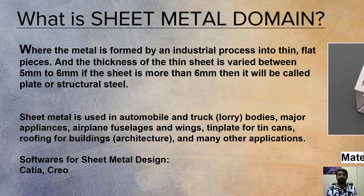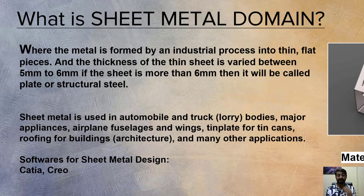The next domain is sheet metal. Sheet metal is formed by an industrial process into thin, flat pieces. The thickness varies between 0.5 mm to 6 mm; if the sheet is more than 6 mm, it is called a plate or structural steel. Sheet metal doesn't have volume — it is flat — and is used in automobile and truck body manufacturing, major appliances, airplane fuselages and wings, tin cans, roofing for buildings, and many other applications. Popular software for sheet metal are CATIA and CREO.